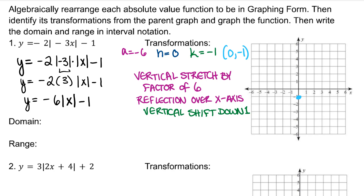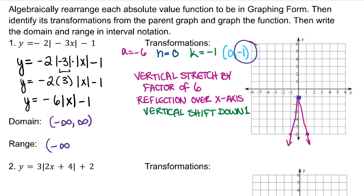Because A is negative 6, the slope of my line to the right will be down 6 and over 1, and the slope to the left will be up 6 and over 1. The domain for absolute value functions is negative infinity to infinity, even with any amount of transformations. But the range values are restricted. In this case, our range starts at negative infinity and ends at the highest y-value, which is the y-value of the vertex. Because that's part of the vertex, we use a bracket.